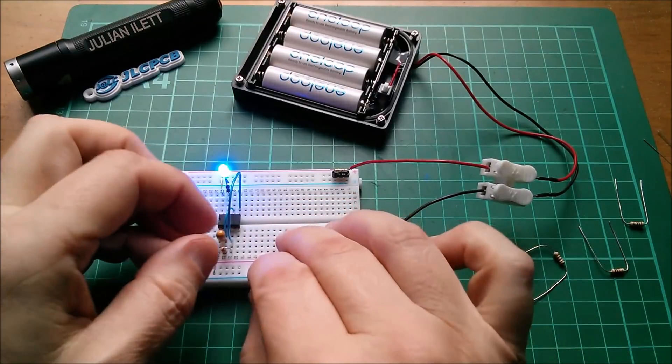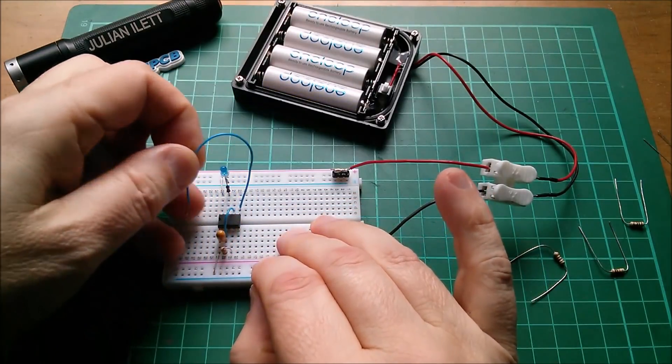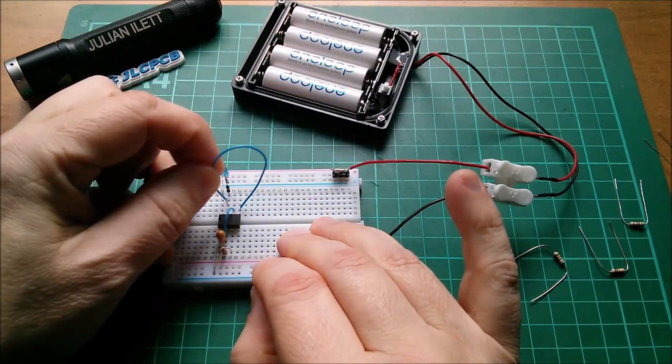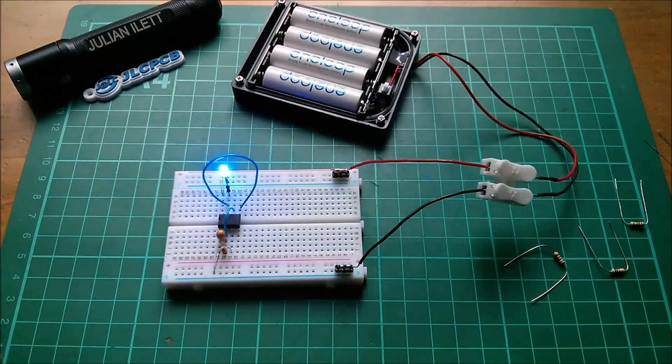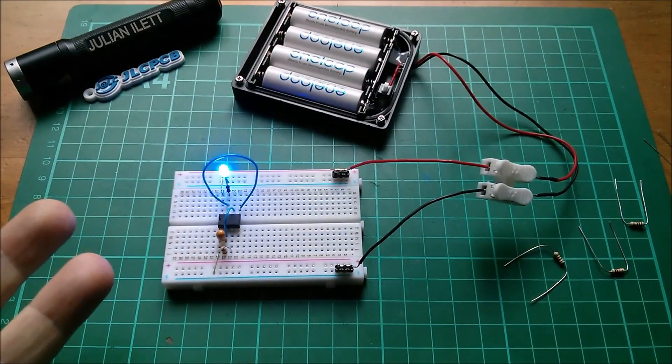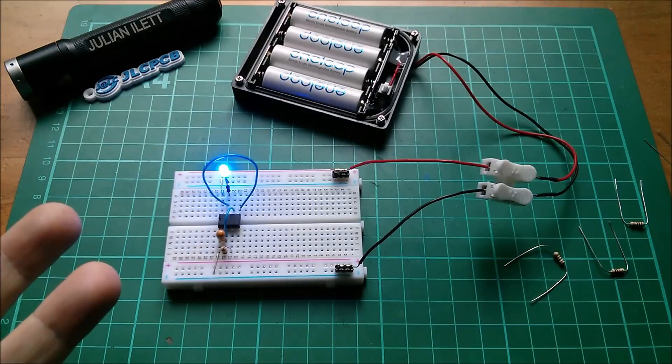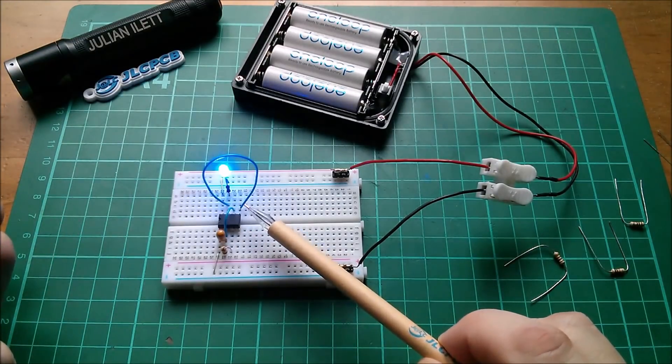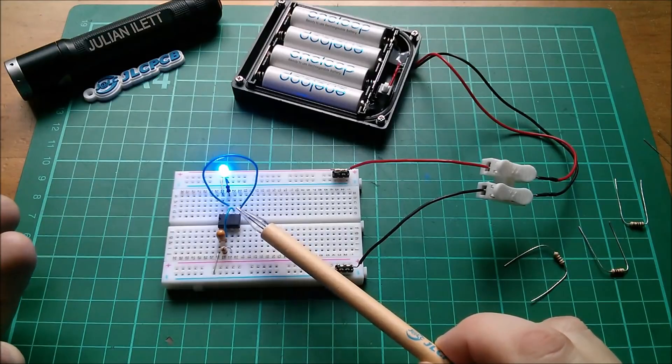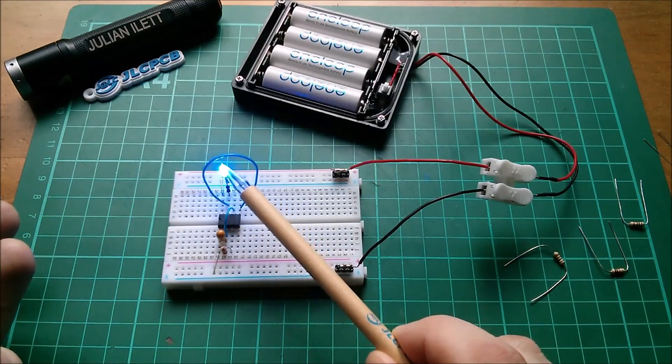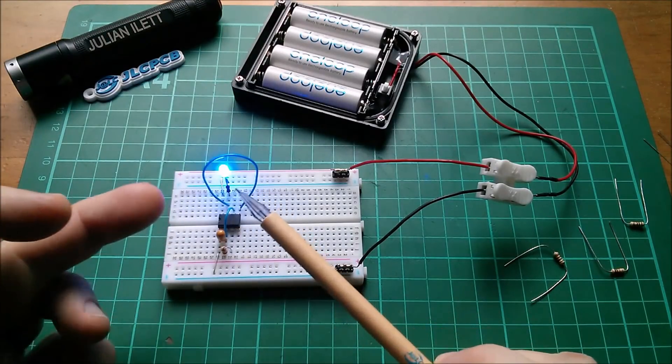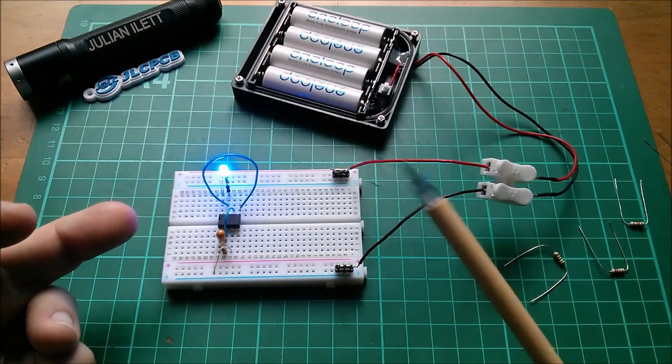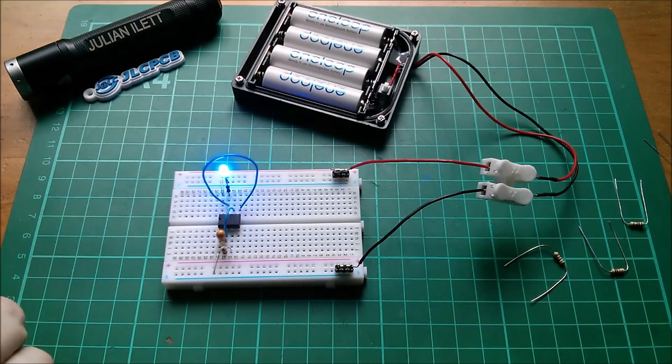Then I thought okay well rather than drive that from pin 3 let's drive it from the very similar signal, pin 7, and remarkably perhaps that actually flashes. Now I can't quite get my head around why, and also it's possible that the LED is instrumental in keeping it flashing because that adds a little bit of pull up. I don't know but it works.